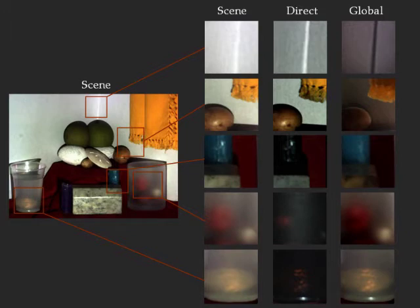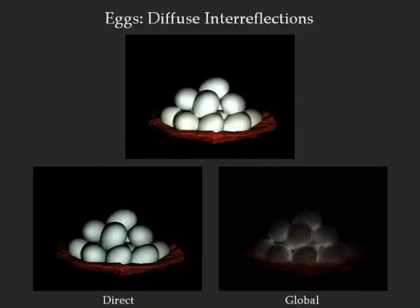We now show results for several simple scenes that highlight specific physical phenomena. In this scene of eggs on a plate, the diffuse interreflections between the eggs are very strong as seen in the global component.